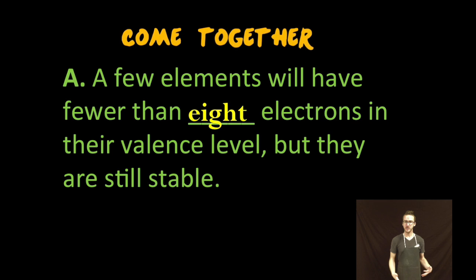So first it's important to recognize that you will have a few elements that will have fewer than eight electrons in their valence level but they are still considered stable or legitimate Lewis valence electron dot representations.